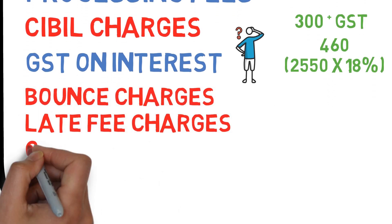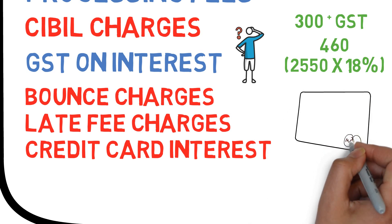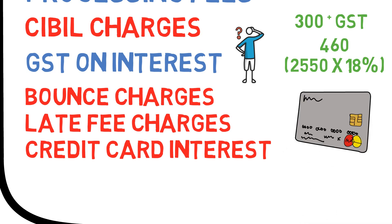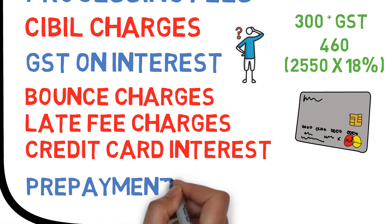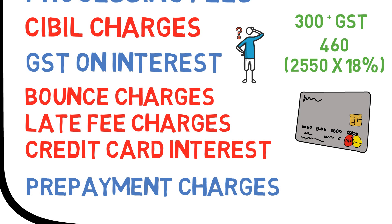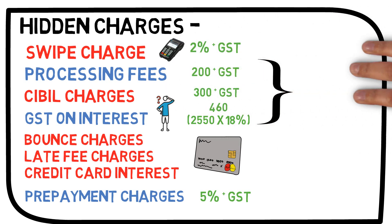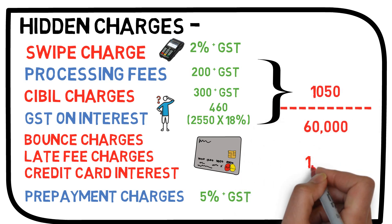Bounce charge, late charge fees, or credit card interest: all zero cost EMI loans are available on a credit card, and depending on the credit card, dishonor of payment would result in levy of charges like bounce charge, late fee charges, and even interest would be charged, which could be as high as 3.5% per month. Pre-payment charges: after availing the loan, if you feel the need to close the loan after understanding the charges, pre-payment charges would be levied, which could be as high as 5% plus GST. So if we consider that all EMIs are serviced on time without any pre-payment and the retailer has not collected swipe charges, still we would end up paying 1,050 rupees on a 60,000 worth product.